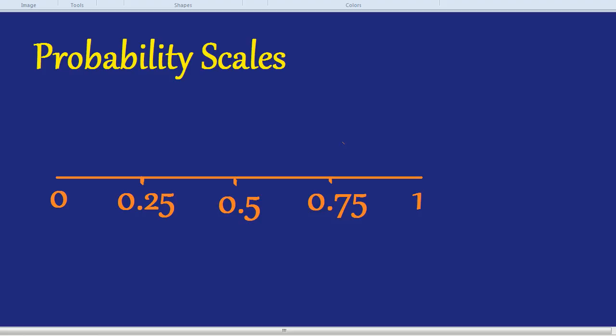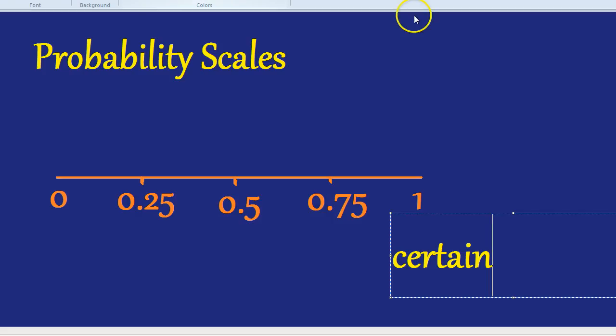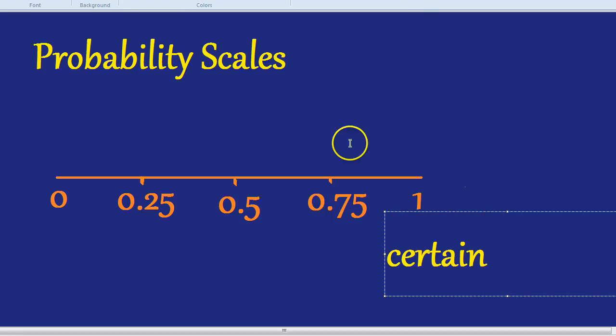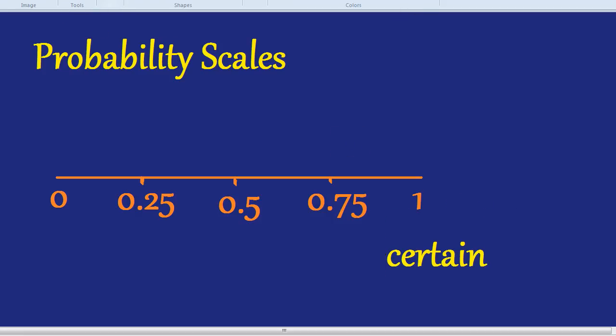Well, the chances are 100%. That is certain. Let's write down the vocabulary beneath. So that would be certain, which is 100%. Where we draw that on the graph is right at one. So that is certain.